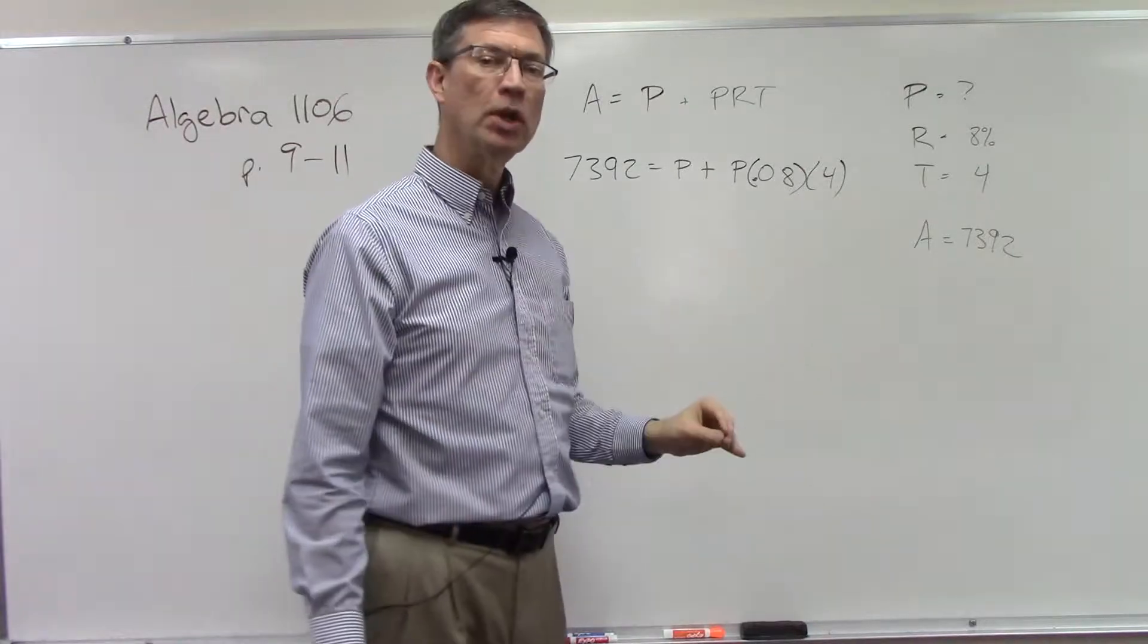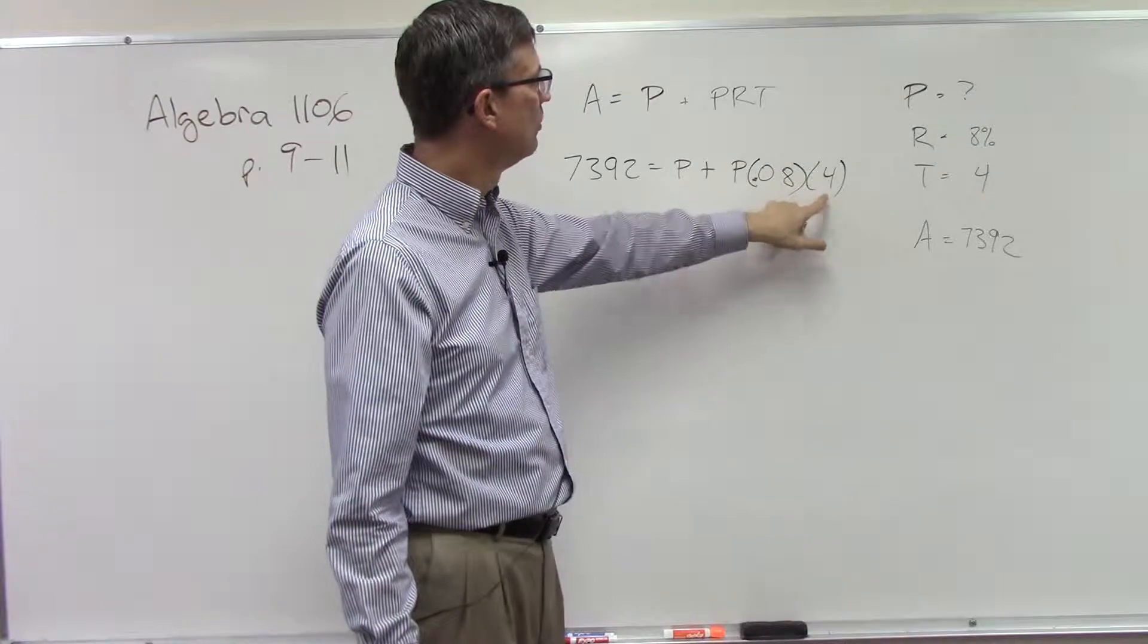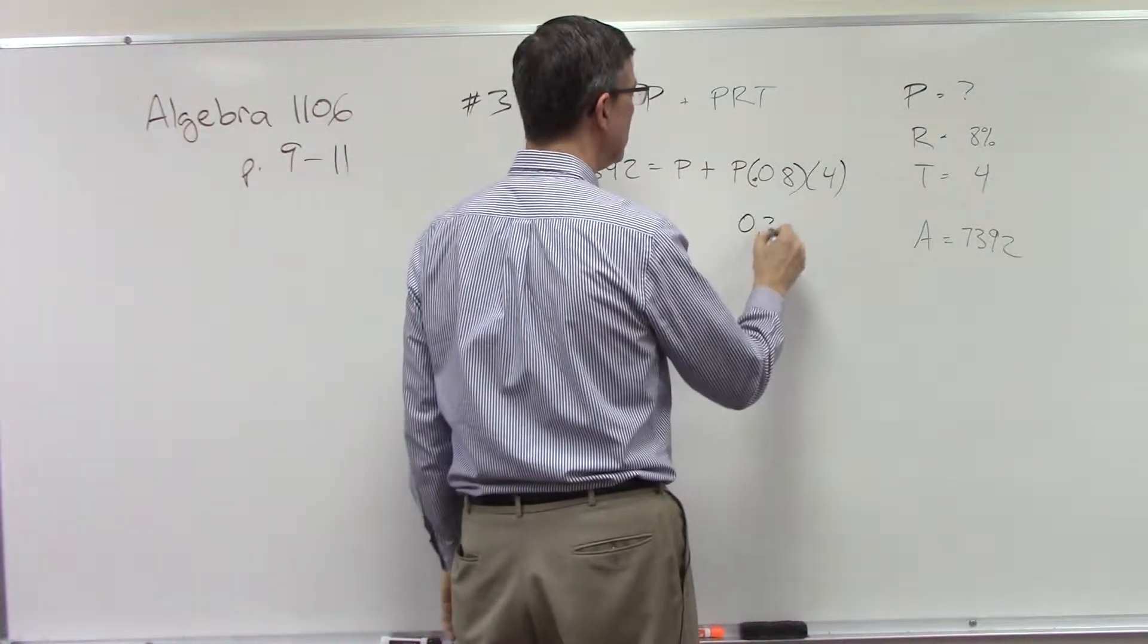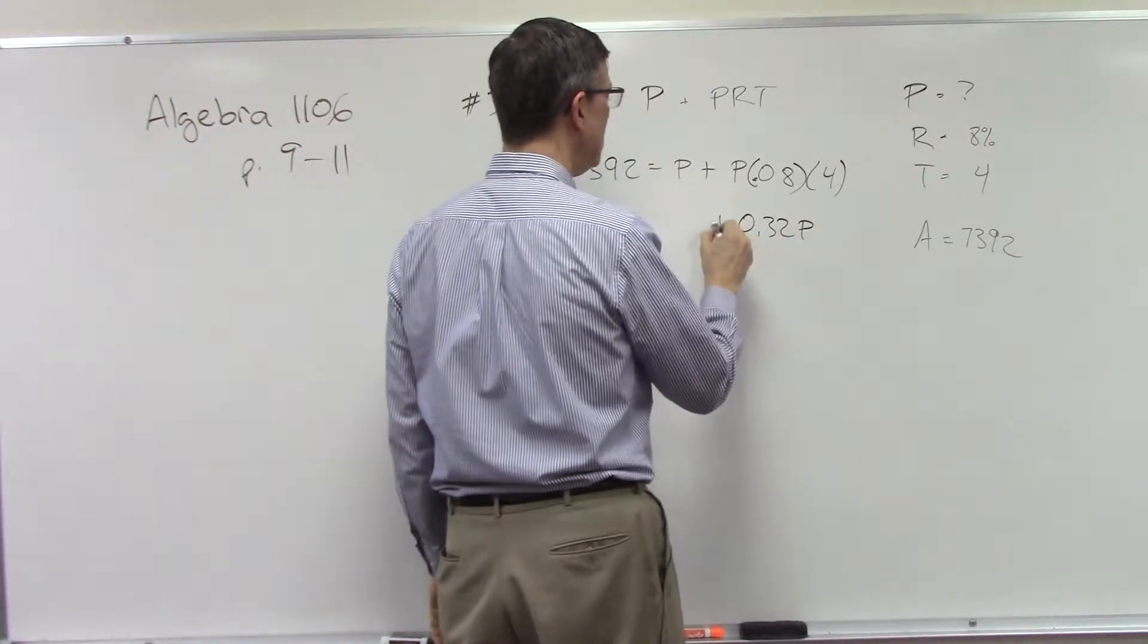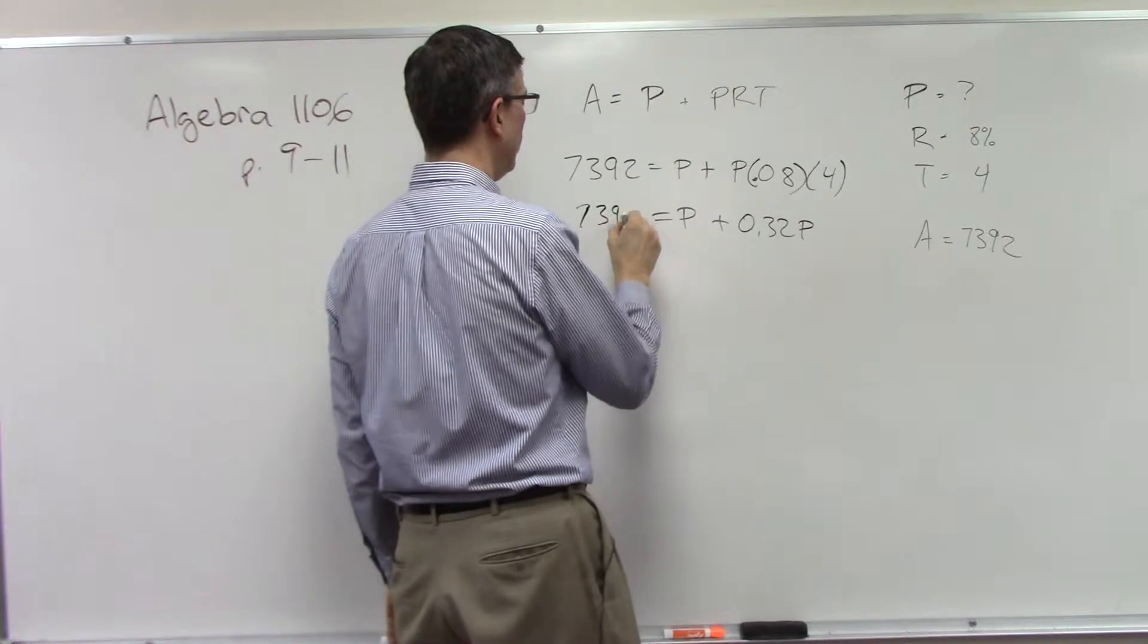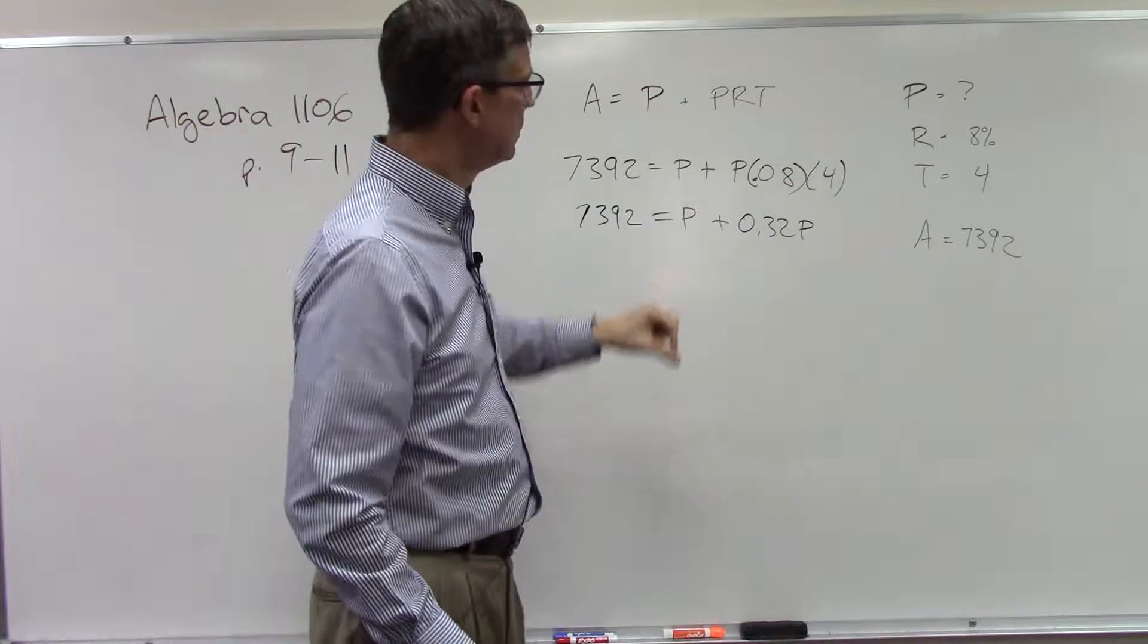Now we've got to do a little bit of algebra here. We're going to solve this. 4 times 0.08 would actually be 0.32, so 7392 equals P plus 0.32P. Now here's something the example problem doesn't explain real well, so let me just talk about this.